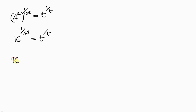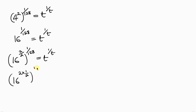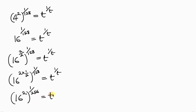Now 16 is the same as 16 to the 2 over 2, raised to the 1 over 128, equal to t to the 1 over t. We simplify by writing it as 16 to the 2, raised to 1 over 128, and applying the law of indices by multiplying the powers: 1 times 1 is 1, all over 2 times 128 is 256. So 16 squared, which is 256, raised to the 1 over 256, equals t to the 1 over t.